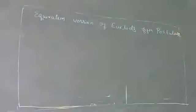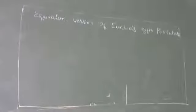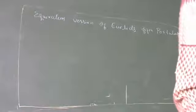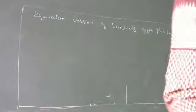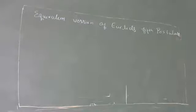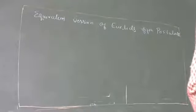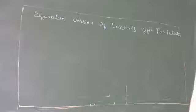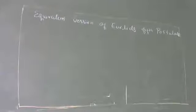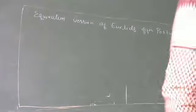We are having nearly five axioms, some postulates and definitions. We have studied all the axioms, postulates and definitions. Seven axioms are relevant for our syllabus. Now here we are going to study the last topic of this chapter, that is the equivalent version of Euclid's fifth postulate.